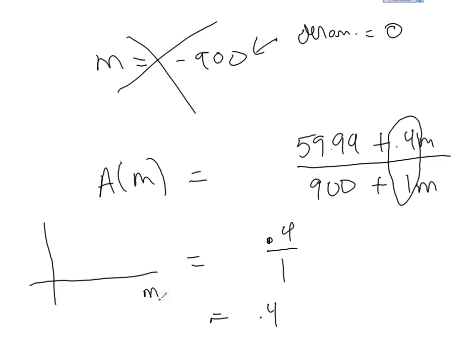Now we're noticing that as the number of minutes increases, the average—in this case we're looking at the average really, that's what A represents. The outputs are in dollars per minute.